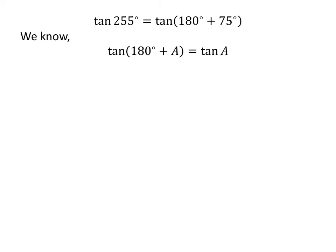We know the trigonometry identity: tangent of 180 degrees plus A is equal to tangent of A. The proof of this identity is explained in the video appearing in the upper right corner, and the link is also given in the description. So, tangent of 255 degrees is equal to tangent of 75 degrees.